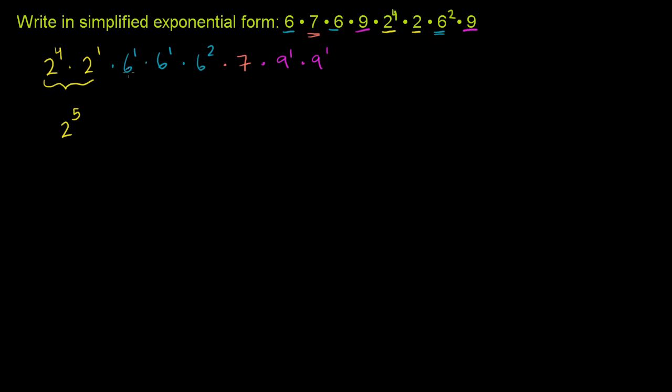Then you have your 6's. 6 to the 1st times 6 to the 1st times 6 squared is the same thing as 6 to the 1 plus 1 plus 2, or 6 to the 4th power. Then we have that 7 there. Nothing really you can do to simplify that, times that 7.